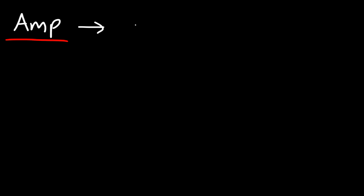What exactly is an amp? What does the amp represent? An amp is a unit of electric current. It tells you how much current is flowing in a circuit.